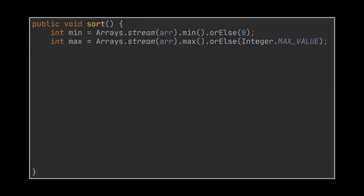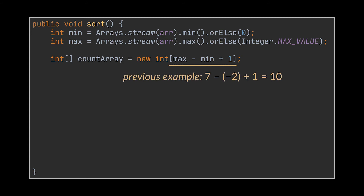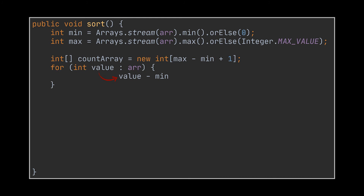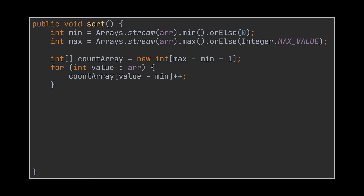Inside the sort method we retrieved the minimum and maximum values using the Streams API max and min functions. Now that minimum and maximum are calculated, we can start with the actual algorithm. The first thing we do is create the array that will store the occurrences of each value. This is done using the new keyword. The number of elements this array should hold is max minus min plus one — remember we had a minimum of minus two and a maximum of seven, requiring 10 slots. The plus one accounts for including zero. Next, we iterate over the array we need to sort and for each value subtract the minimum from it, then increment the count at that resulting index.